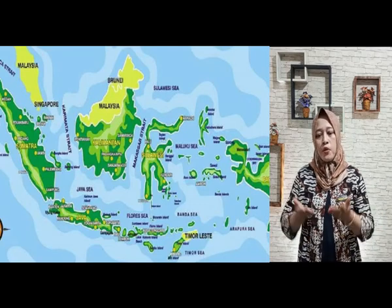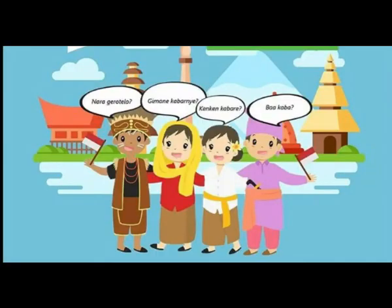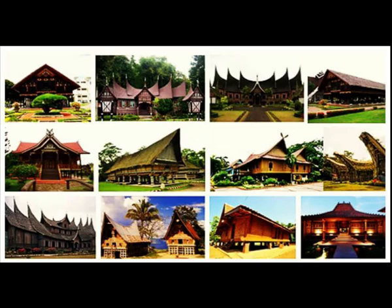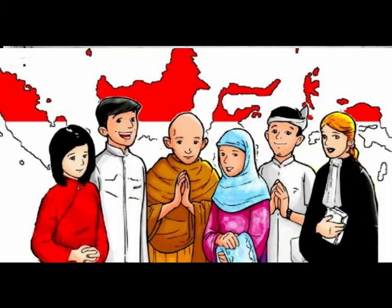Anak-anak, ternyata kondisi geografis Indonesia berupa kepulauan yang tersebar dari Sabang sampai Merauke. Hal ini mengakibatkan beragamnya budaya bangsa Indonesia, seperti bahasa, rumah adat, kebudayaan, adat istiadat, religi atau agama. Contoh budaya asli dari Indonesia adalah tari reak dari Ponorogo.